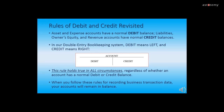Now we will revisit the rules of debit and credit. Assets and expense accounts have a normal debit balance. Liabilities, owner's equity, and revenue accounts have a normal credit balance. In our double entry bookkeeping system, debit simply means left and credit simply means right. This holds true in all circumstances regardless of whether an account has a normal debit or credit balance. When you follow these rules for recording business transaction data, your accounts will remain in balance. Please do not read too much into what debit means or what credit means — just remember that debit means left and credit means right.